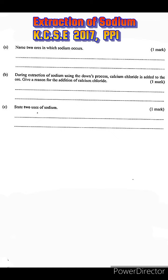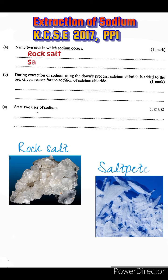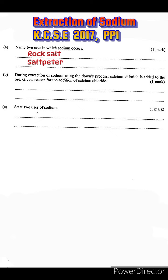Sodium has quite a few ores, but two of the more common ones are rock salt — this is solid sodium chloride, considered to be the main ore from which sodium is extracted — and also salt peter.